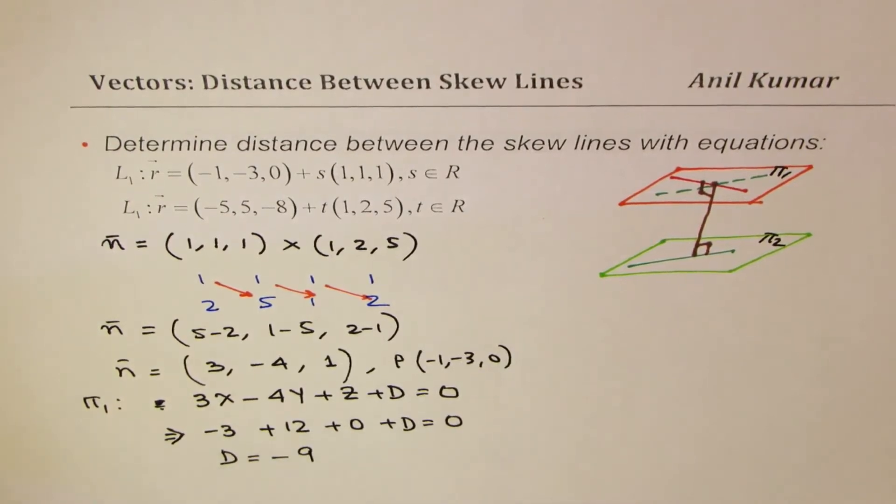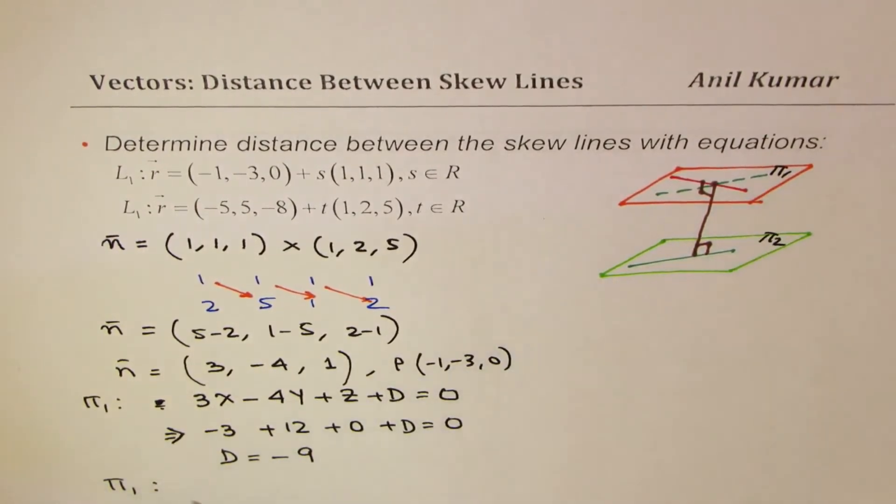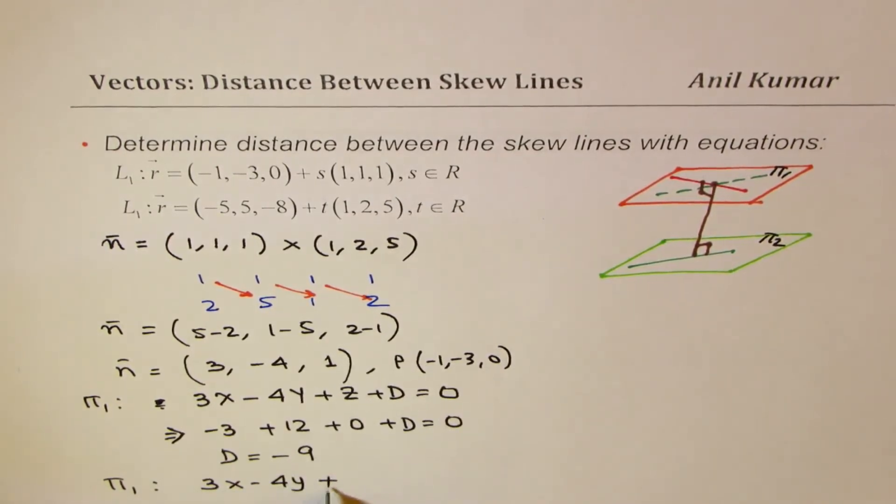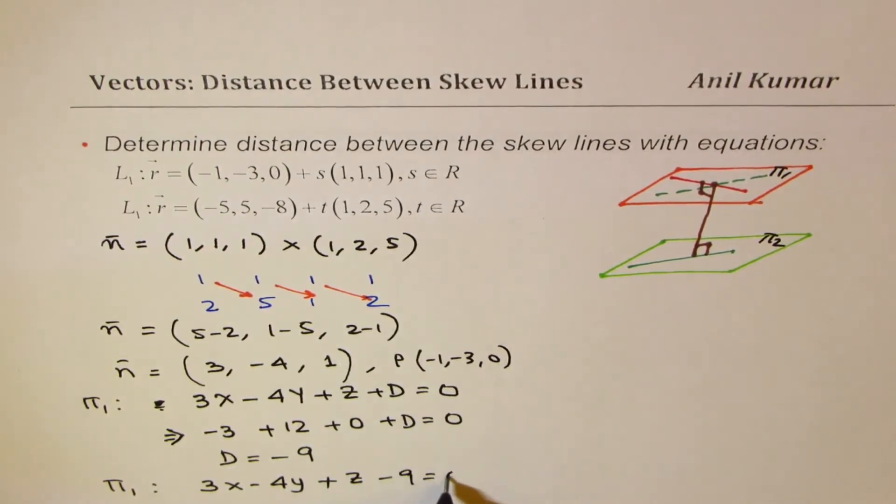So we get the equation of the plane π1, the one on the top, as 3x minus 4y plus z minus 9 equals to 0.